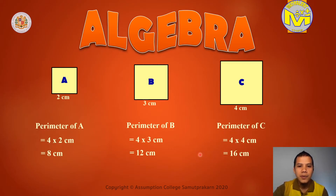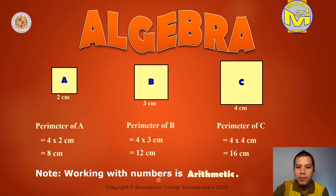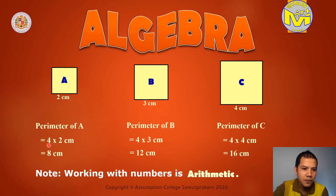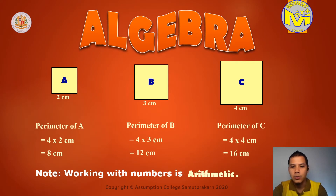Is that algebra? No, not yet. This is only arithmetic. What is arithmetic? Working with numbers is arithmetic. Arithmetic means we only use numbers. Look at this: 4 times 2 is 8, 4 times 3 is 12, 4 times 4 is 16. So that is arithmetic. What is algebra? Let's go to the next slide.